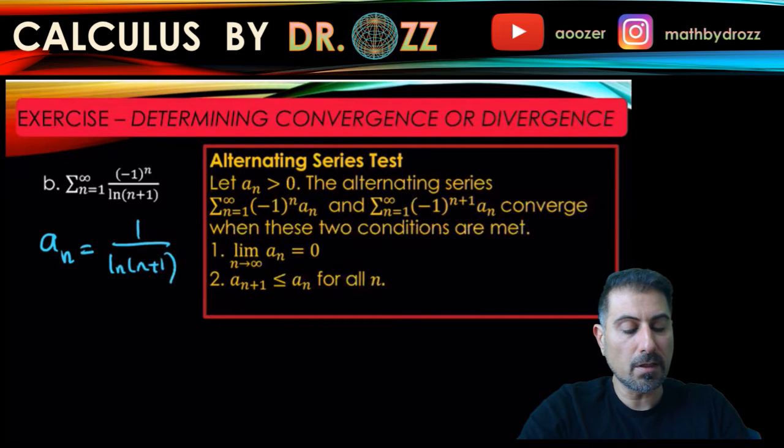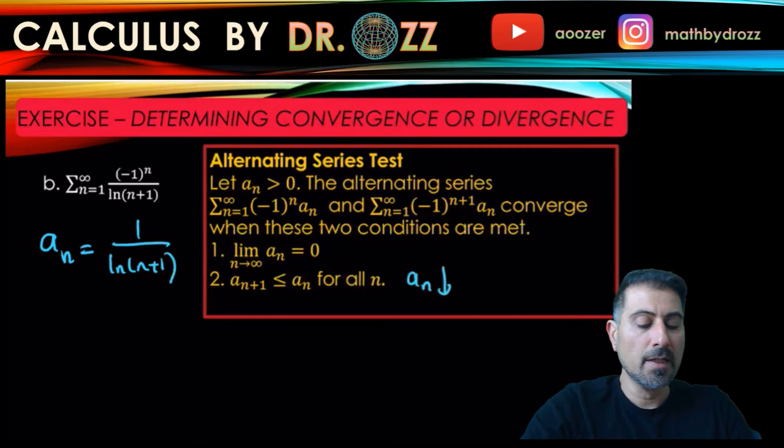So I'm calling a_n to be 1 over ln(n+1). Again, first condition is the limit condition. Second condition is equivalent to proving that a_n is decreasing.